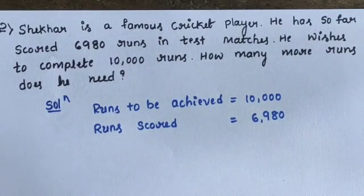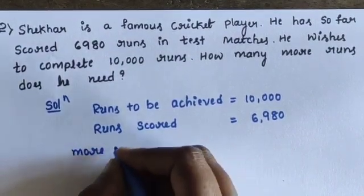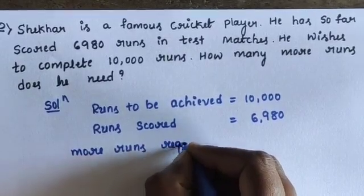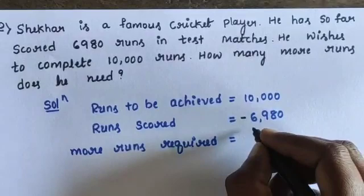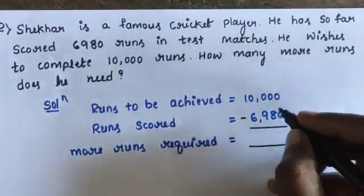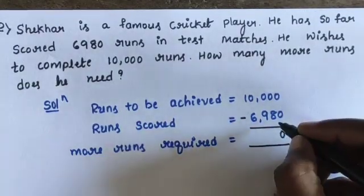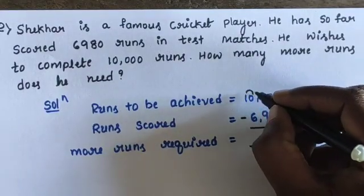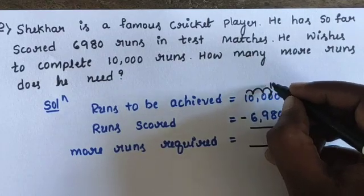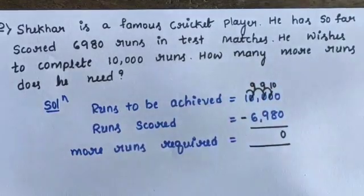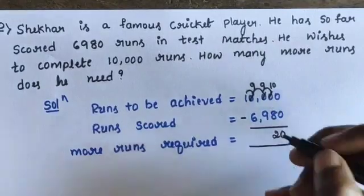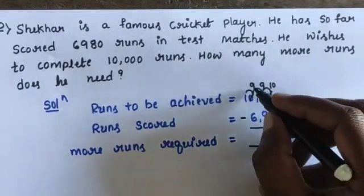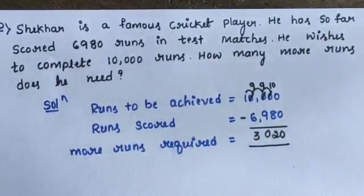This is a subtraction problem. More runs required is equal to 10,000 minus 6,980. 0 minus 0 is 0, 0 minus 8: take carry, so 10 minus 8 is 2. Then 9 minus 9 is 0. Then 9 minus 6 is 3. So the more runs required is equal to 3,020 runs.